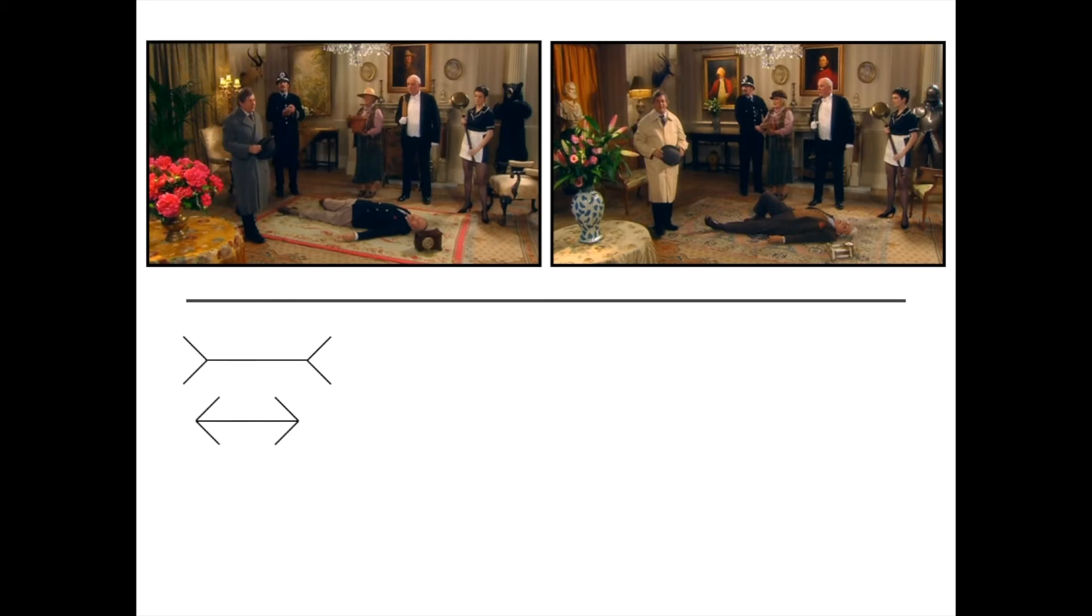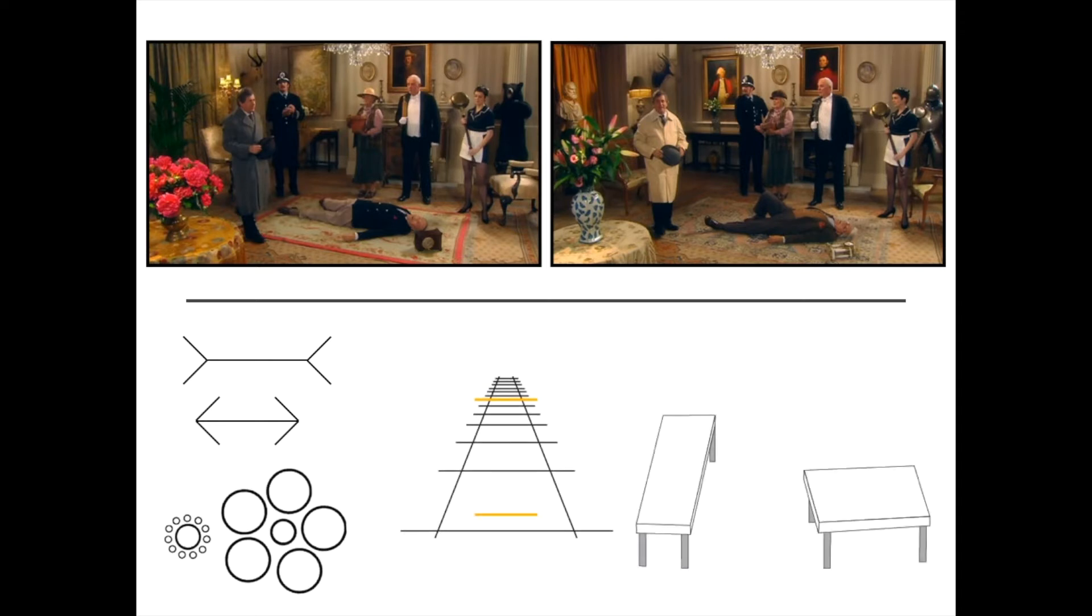On the other hand, we see things that don't actually exist in the world. So here we see a difference in the length of these lines, even though no difference exists. We see illusions of size, illusions of depth, and illusions where just the orientation, vertical versus horizontal of an item, can change what we see. The surface of these two tables, for example, is identical as I can demonstrate here by overlaying them.